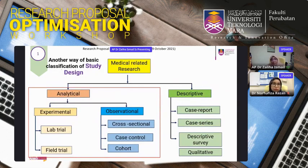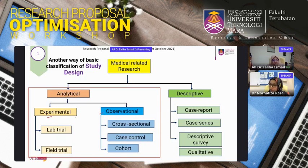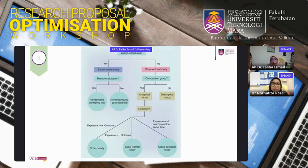A simpler way to classify study designs is descriptive versus analytical. Descriptive studies include case reports, case series, descriptive surveys, and qualitative studies — commonly used among clinicians. Analytical studies include experimental studies such as clinical trials, lab trials, and field trials, and observational studies including cross-sectional, case-control, and cohort designs.